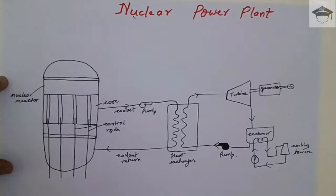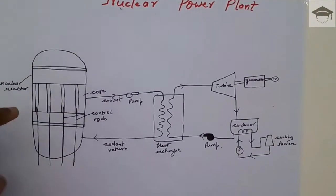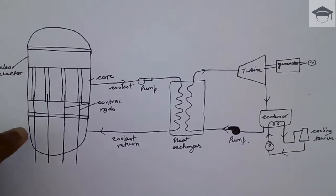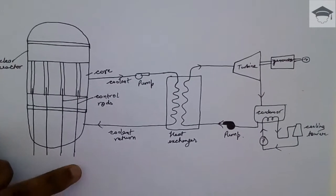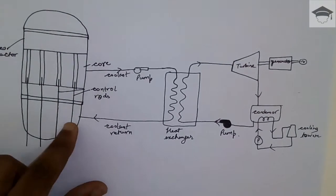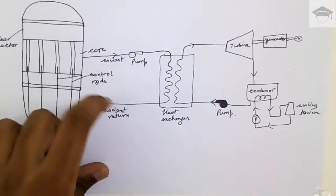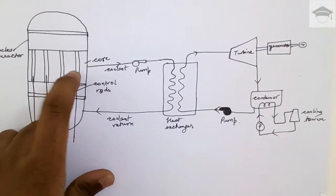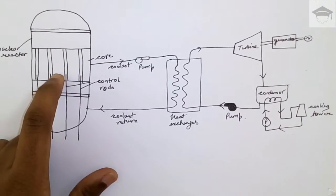This is a nuclear reactor. This is the reactor core. These are the control rods. And the coolant is passed from down to up via pump. It takes the heat from the nuclear reactions. Commonly in India, CANDU reactor is used, that is Canadian Deuterium reactor.